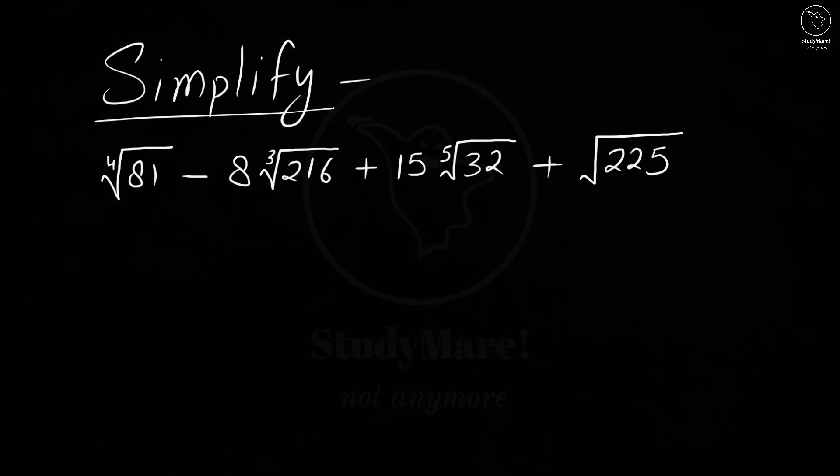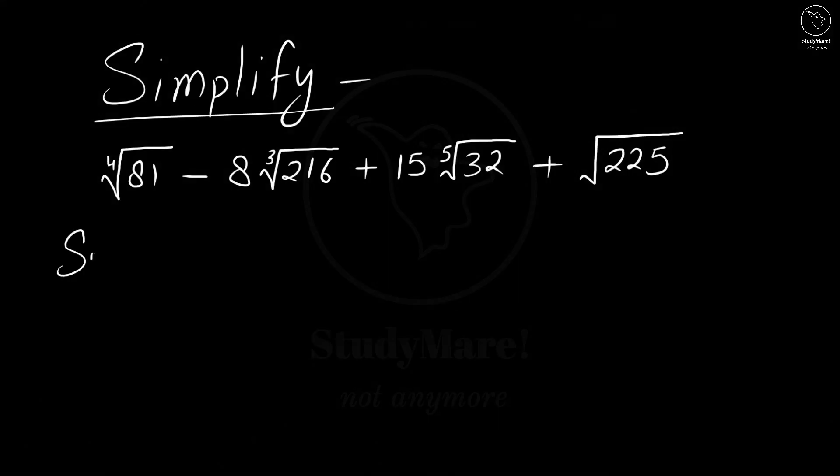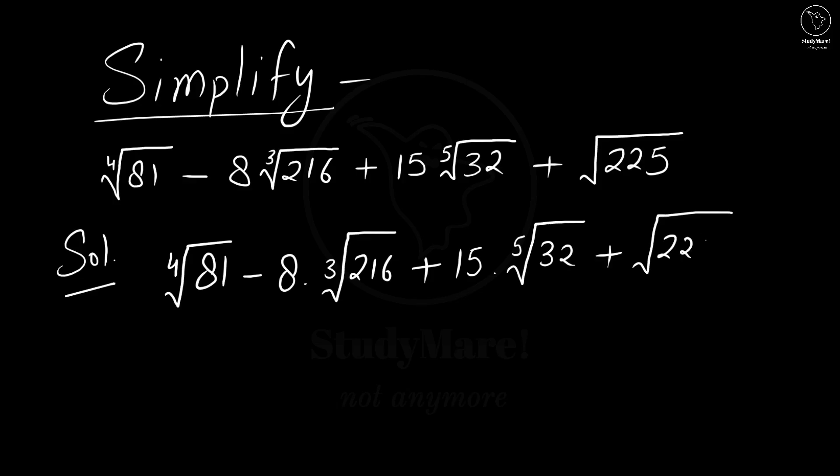Let us see how it can be solved. So the given question is 4th root of 81 minus 8 into 3rd root of 216 plus 15 into 5th root of 32 plus root of 225.